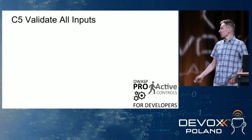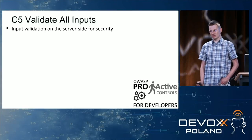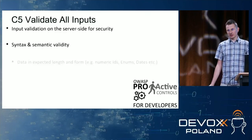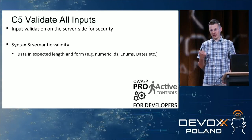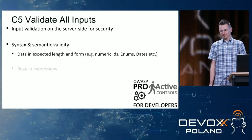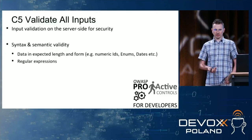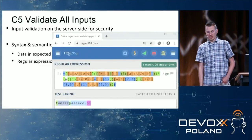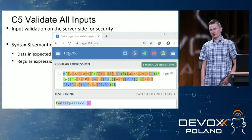Chapter 5 speaks about validating inputs. Input validation must be done on the server for security. In regards to syntax and semantic validity, we should check if the data is in the expected length and form — like numeric IDs, enumerator values coming through the domain of the enumerator, dates, etc. Often regular expressions are used, but as regular expressions are very powerful, they can cause troubles. Here's an example of a real-world email validation regex taken from a forum.